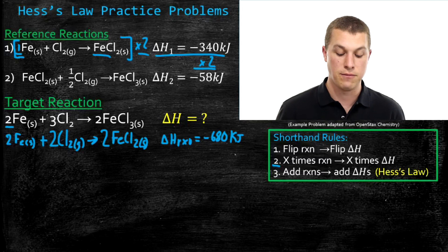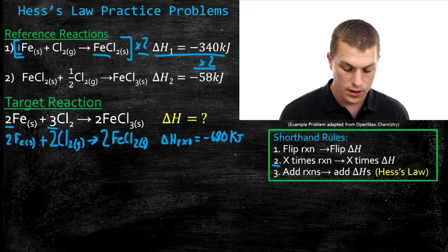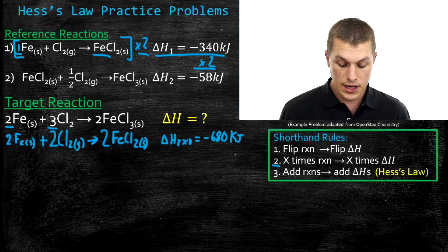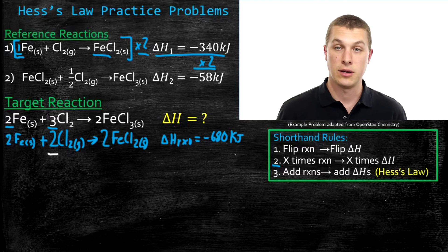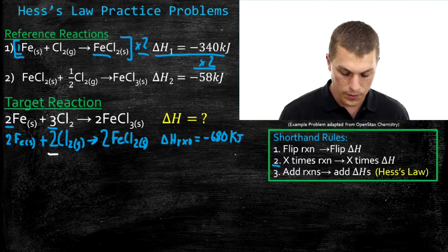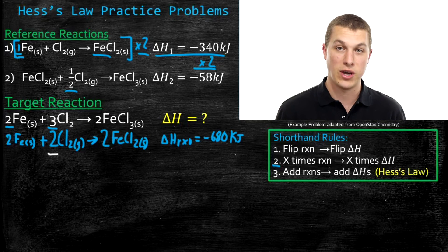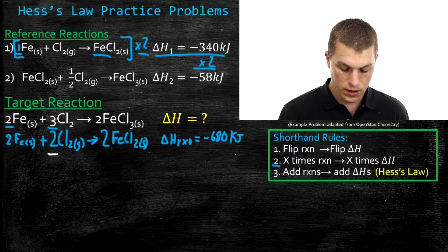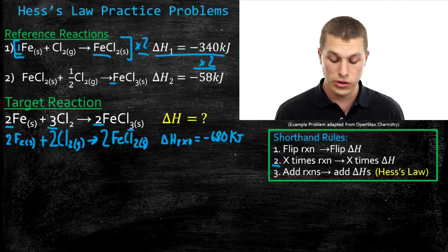Now the number of irons matches. Let's look at chlorine — I need three in my target reaction. I've multiplied reference reaction one by two, giving me two chlorines, but I need more. In my second reference reaction I have half a chlorine, and two plus one-half doesn't quite give me three. Also, in my target reaction I want two iron three chlorides, but reference reaction two only has one. So I'm going to need to multiply reaction two by two as well.